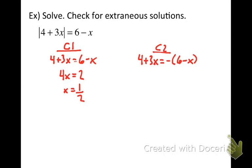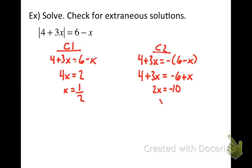For Case 2: 4 plus 3x equals the opposite of 6 minus x. Distribute the negative sign to get negative 6 plus x. Then subtract x from both sides: 3x minus x is 2x. Subtract 4 from both sides: negative 6 minus 4 is negative 10. So x equals negative 5. Now — in the last example we had one solution and one extraneous, and the extraneous happened to be the fractional value. Does that mean every fraction is extraneous? There's no way to know without checking.